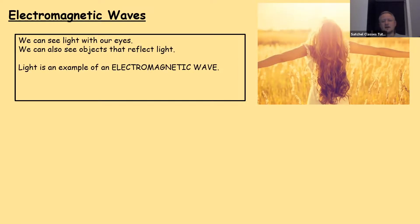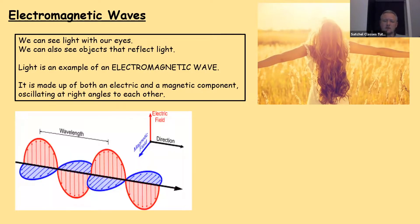So, electromagnetic waves then. We can see light with our eyes. We can also see objects that reflect light. Light is an example of an electromagnetic wave. It's made up of both an electric and a magnetic component oscillating at right angles to each other. And for this reason, electromagnetic waves have zero electrical charge. This is what we mean by an electric and a magnetic component oscillating at right angles to each other. You can see the red line denotes the electric field and the blue line denotes the magnetic field in the diagram below.